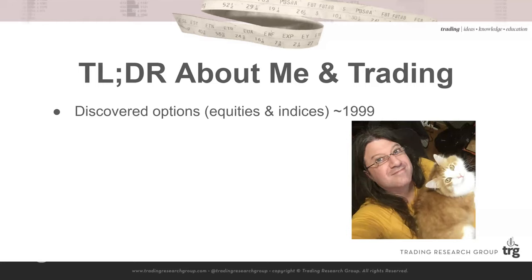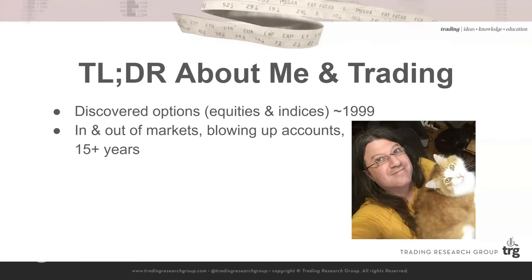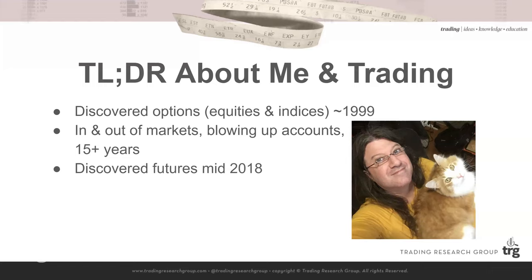The quick TLDR about me: I discovered options first — equity and index options around 1998 to 2000. After that I was in and out of the markets, blowing up my accounts for 15 or more years. There were no good SIMs, no evaluation companies, no micros even — you had no choice but to trade real money. Paper trading is interesting just to track behaviors, but it won't teach you how to trade. I discovered futures and was introduced to them in mid-2018, and they totally blew my mind. I struggled with them, and then I discovered order flow towards the end of 2019, completely by accident.